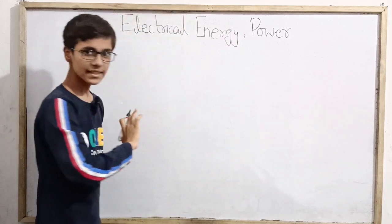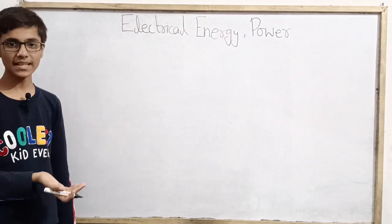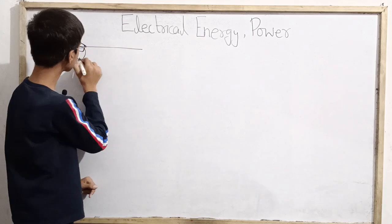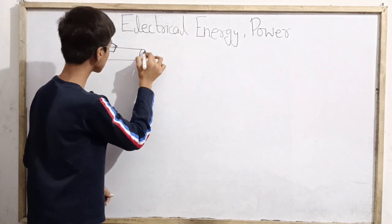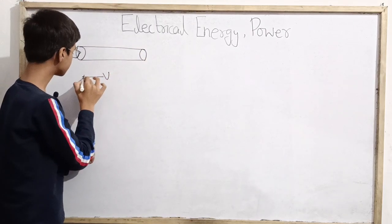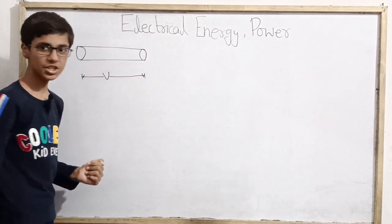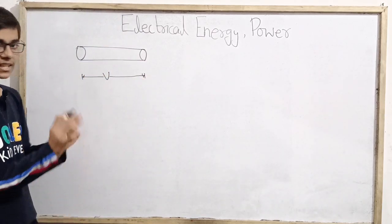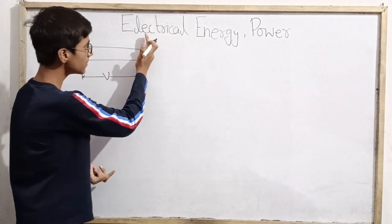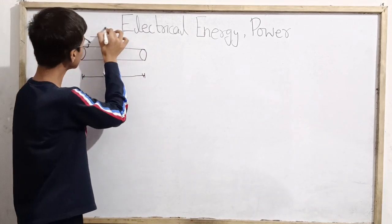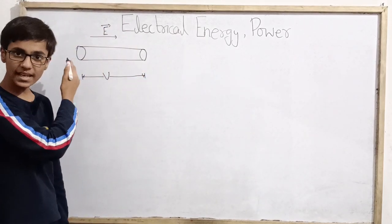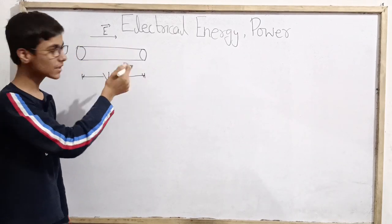Let's assume that you have any device — any conductor. Assume we have a conductor, and the potential difference between its two ends is V. Since there is a potential difference, electrons will flow. This end is at higher potential and this end is at lower potential, meaning the electric field is in this direction, and so electrons will move in the opposite direction.